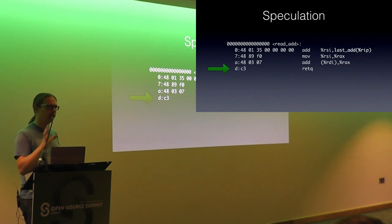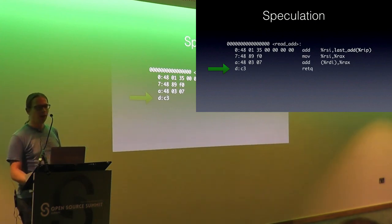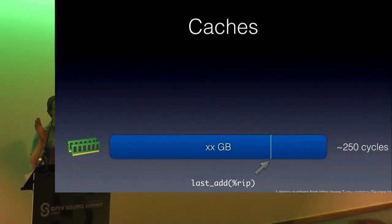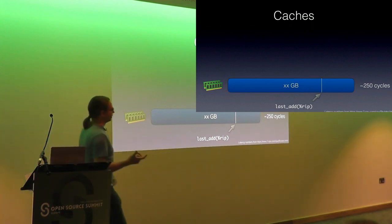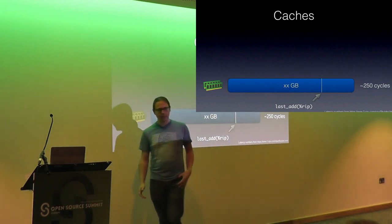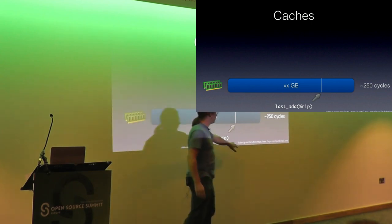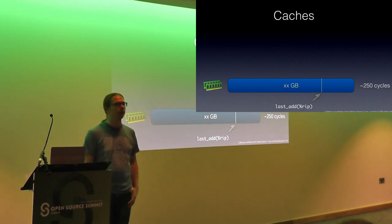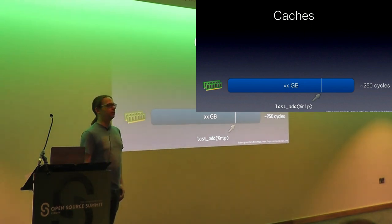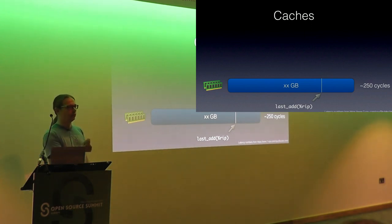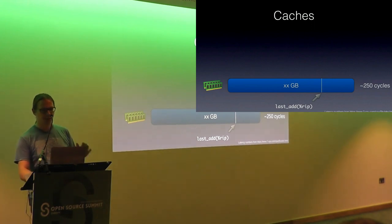Memory these days is incredibly slow. On a Skylake system you find latency numbers: it takes about 250 CPU cycles — depending on how fast your CPU and RAM run — to access just memory. If you had nothing in between your CPU and that memory and every access took 250 CPU cycles, you would basically be crawling. So accessing memory directly is completely out of the question — you cannot do that. That's why people invented caches.